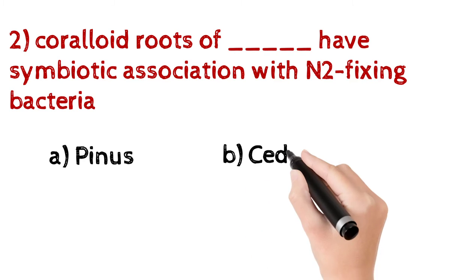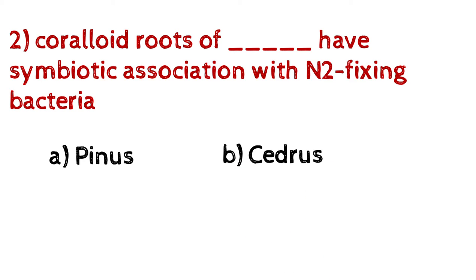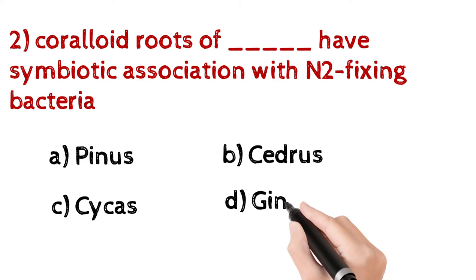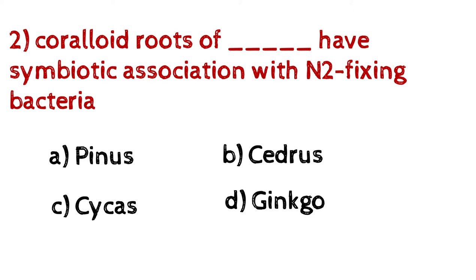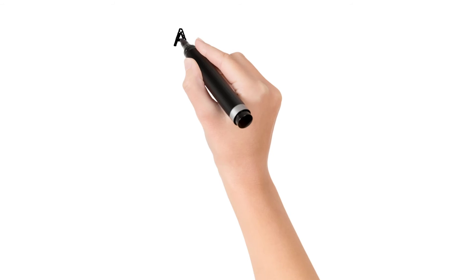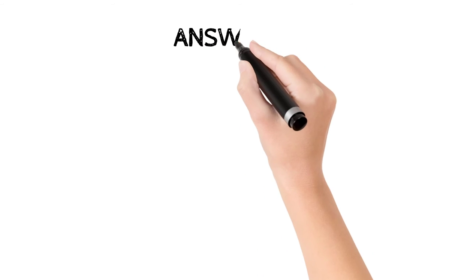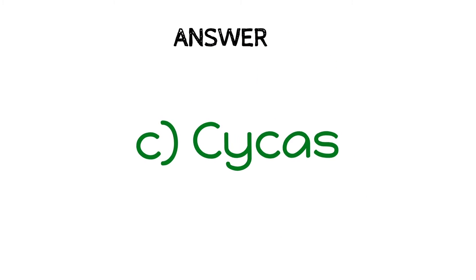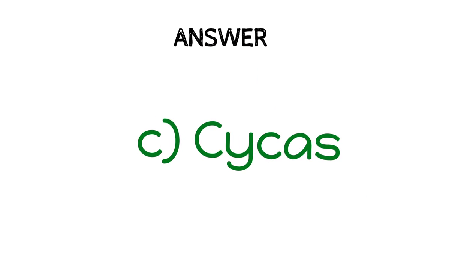Question number two: coralloid roots of dash have symbiotic association with nitrogen-fixing bacteria. A) Pinus, B) Cedrus, C) Cycas, D) Ginkgo. And the answer is C) Cycas.